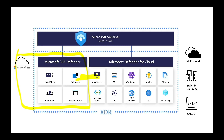Defender for Cloud is painting this integrated, correlated, contextualized XDR picture for us. We saw some of those integrations — Zach showed what's happening on the M365 side, and we saw integrations between Defender for Endpoint and Defender for Cloud. Defender for Cloud is protecting workloads on the right side that may not be part of the Microsoft ecosystem — like that on-prem resource we saw.